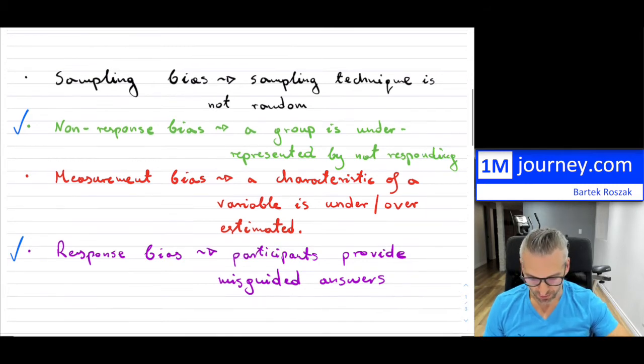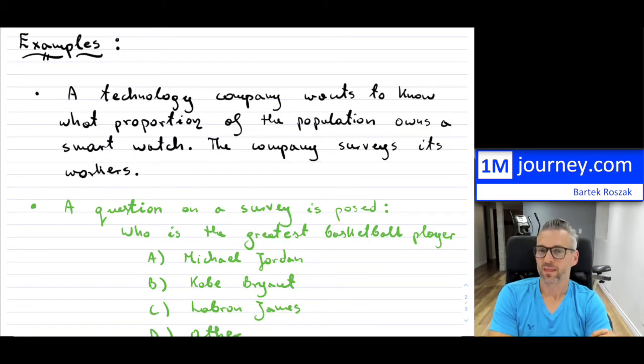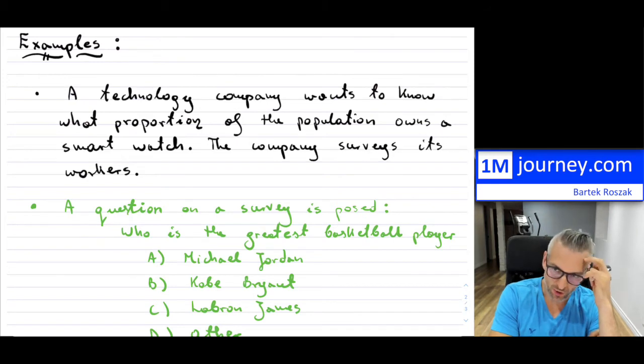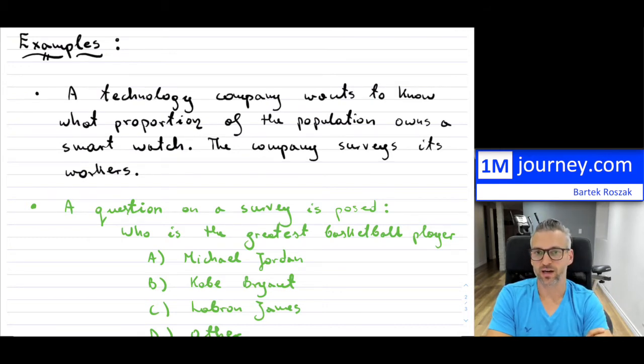So here are some examples. I'm going to try to let you know why there's a bias and what kind of bias it might be. So the first one says a technology company wants to know what proportion of the population owns a smartwatch. So I actually don't own one. But what it does is the company surveys its own workers. What bias would be represented?